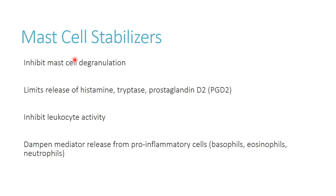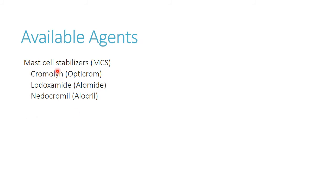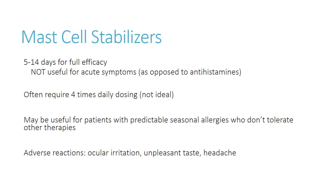Mast cell stabilizers only work if the mast cells have not already degranulated. If there's already been an acute reaction with a ton of histamine released, you won't see much benefit from these. What they can do is prevent future release from mast cells — making them more of a prophylactic drug than a directly therapeutic one. They need to be given more regularly, require frequent dosing — typically two to four times a day — and are typically used for patients who cannot tolerate ocular antihistamines. These include cromolyn, lodoxamide, and nedocromil.